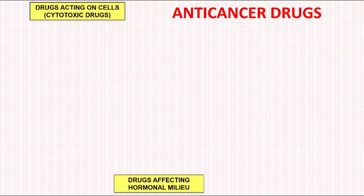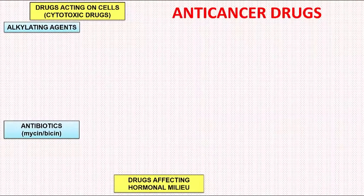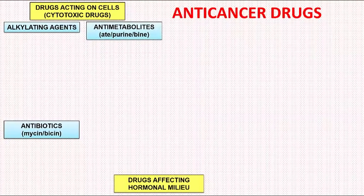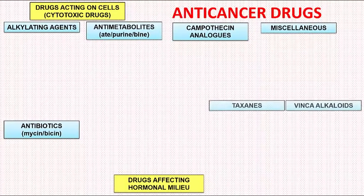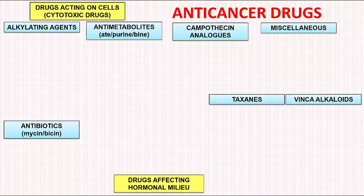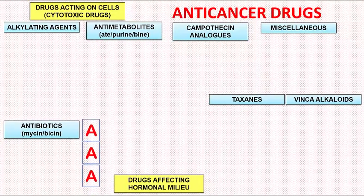In cytotoxic drugs we have 7 main categories: alkylating agents, antibiotics, antimetabolites, camptothecine analogues, miscellaneous drugs, taxanes, and vinca alkaloids. To remember them, just imagine that the 3 A's keep running after a single C all their life.